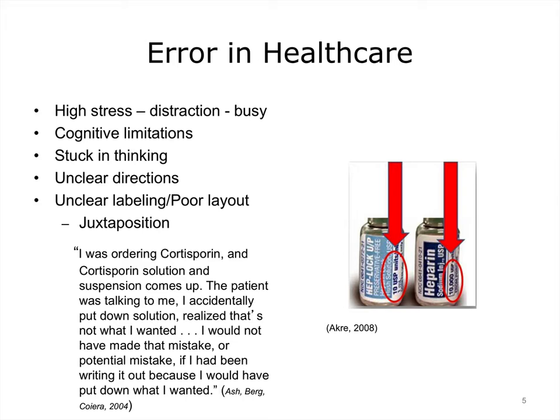Let's think about the ASH article — you can find the link to it in the references. It is a terrific article for this unit where the terms juxtaposition and unclear directions were introduced. This article talks about clinicians who frequently committed juxtaposition errors. This error occurs when something is too close to something else on the screen, and the wrong option is too easily clicked. In prior slides, we talked about small font sizes and clustering drugs together where the first couple of letters are the same. Add an eight-point font to that, and juxtaposition rules.